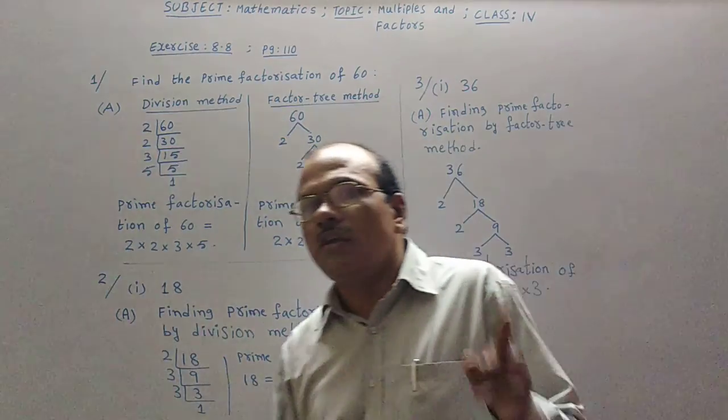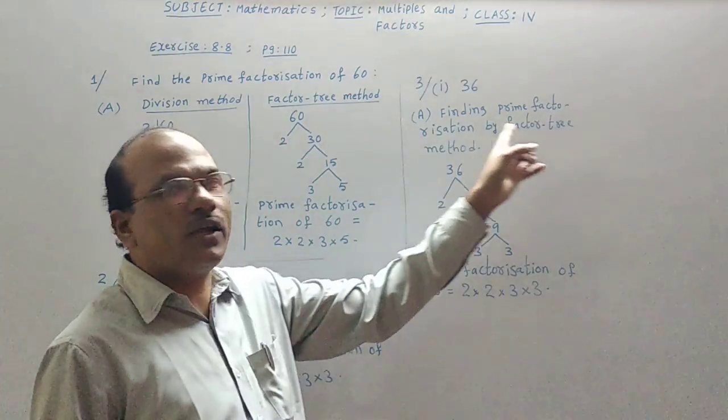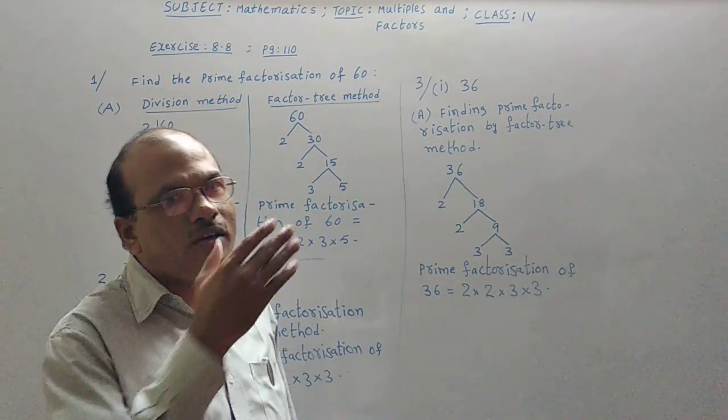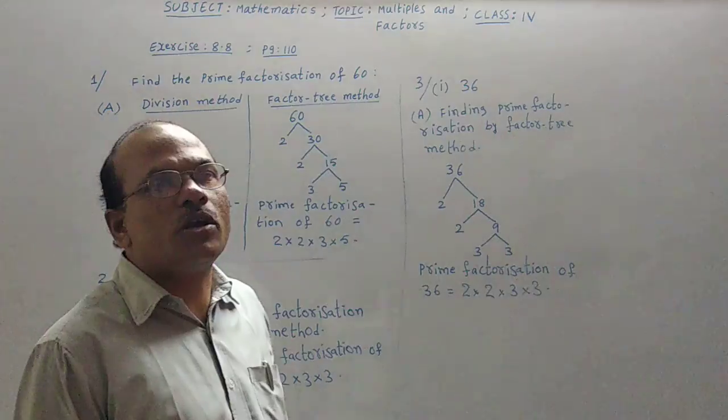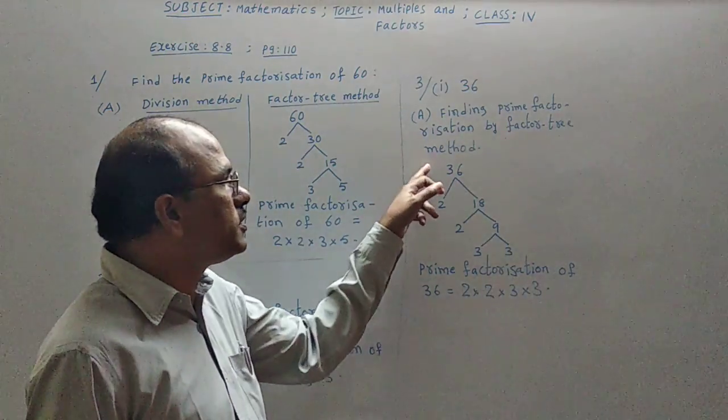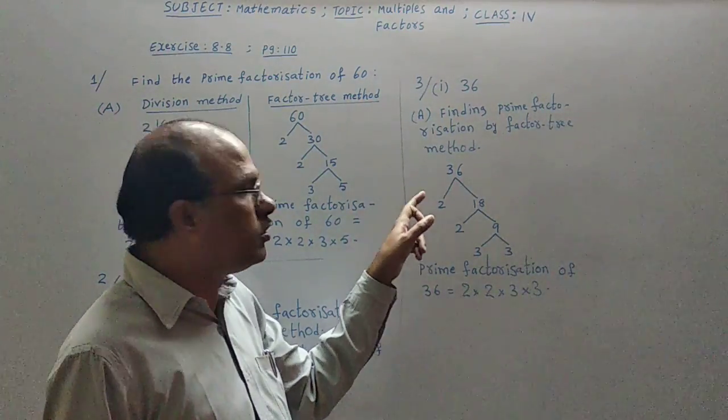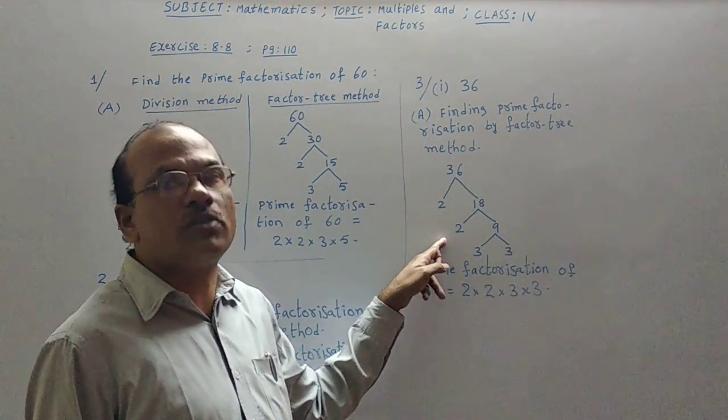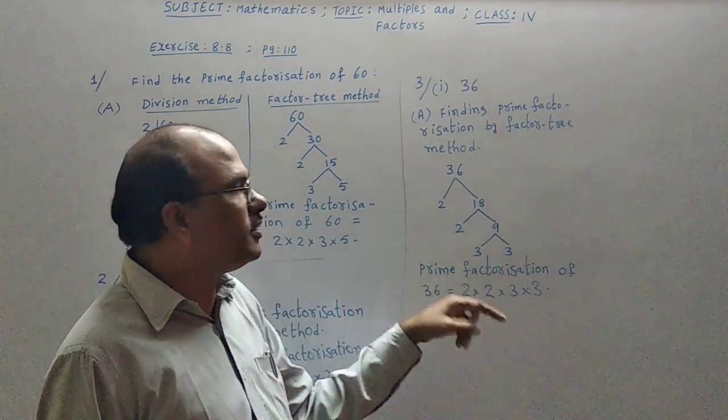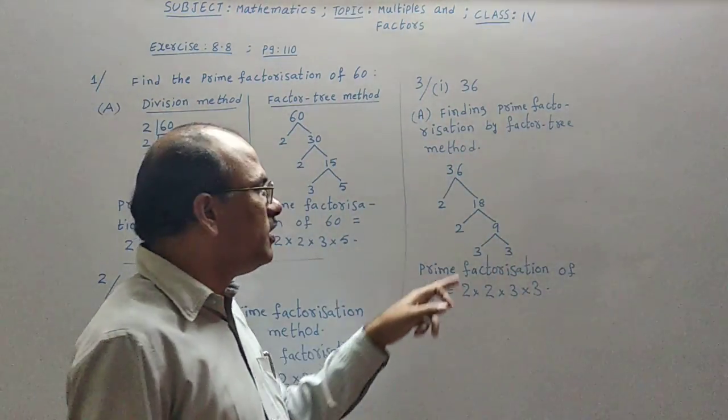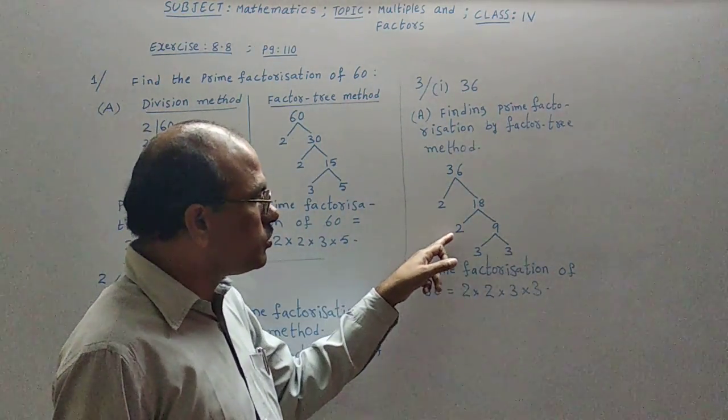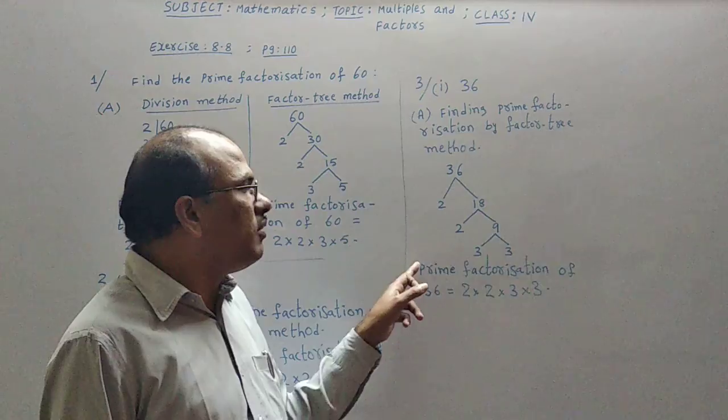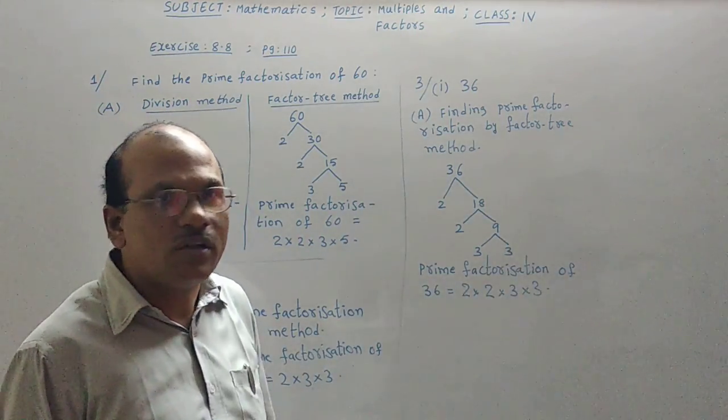Then here question 3. First of which 36 is given. We need to find the prime factorization for the 36, that too by using factor tree method. Third question of the same page, because remaining all sums are of the same model only. We have to practice it. That is 36 taken. 2 table is possible, 2 into 18 gives you 36. Then that 18 again possible in 2 table, 2 times 9 is 18. Then 9 is possible in 3 table, 3 times 3 is 9. Then 2, 2, 3 and 3, all are written with 'into' symbols between them in the prime factorization for the given 36.